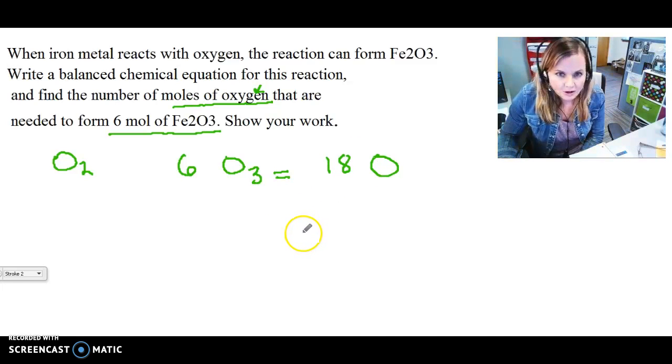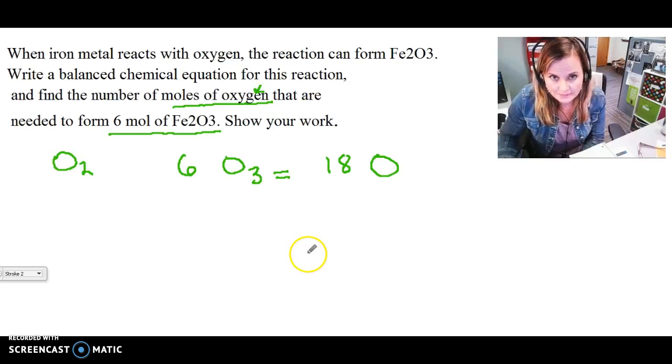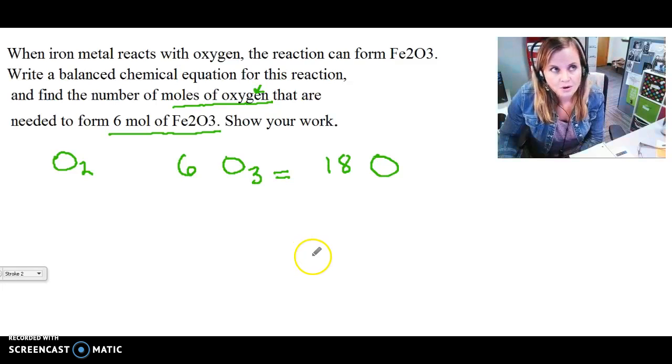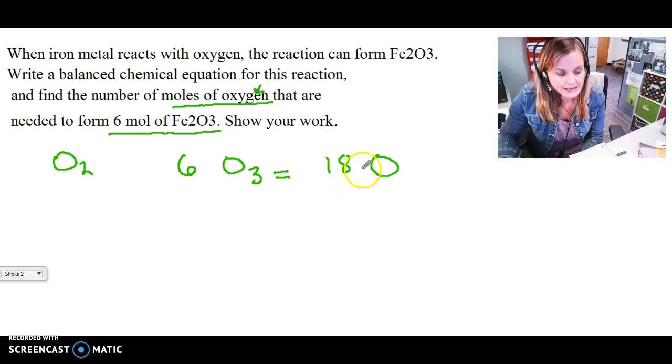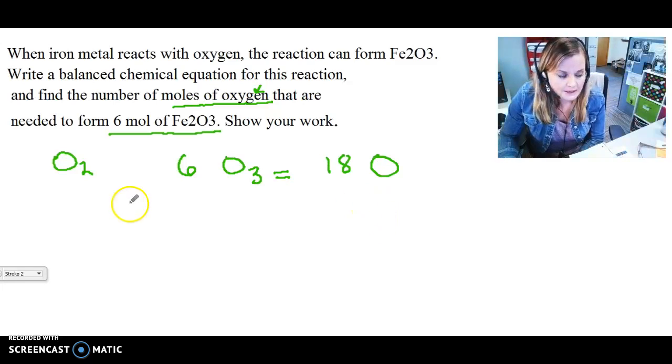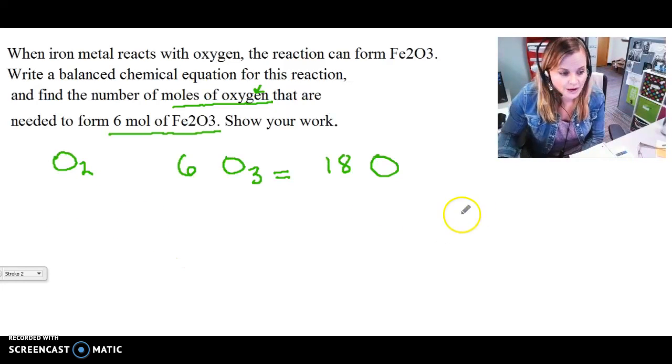Okay, and if you look at your periodic table, if you have one single oxygen atom, it has an atomic mass of 16. And if I wanted a mole of oxygen then I would have 16 grams of oxygen. So by having 18 O's here that would actually give me 18 moles of single O oxygen.